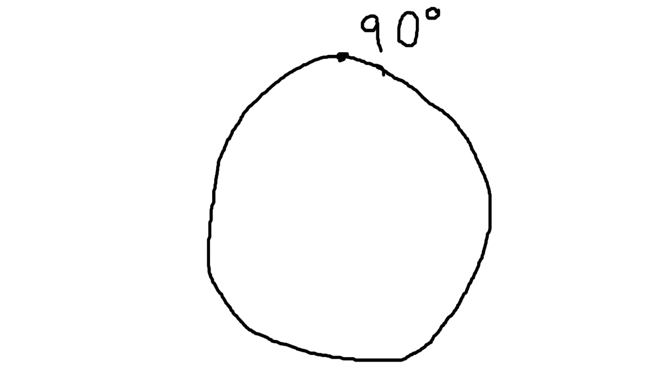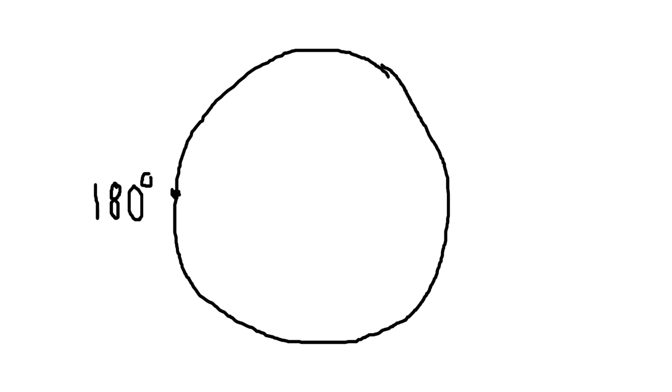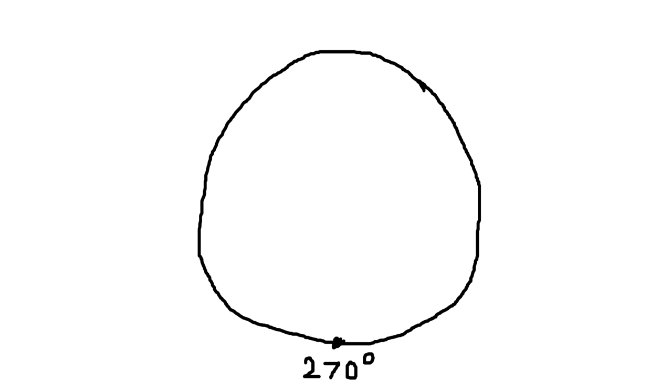At the point (0,1), you have rotated 90 degrees. At the point (-1,0), you have rotated 180 degrees. At the point (0,-1), you have rotated 270 degrees. By the time you reach 360 degrees, you have rotated all the way back around to the original point (1,0).